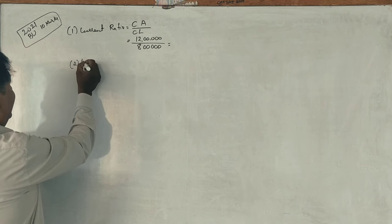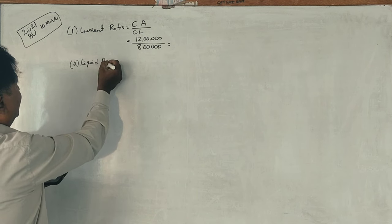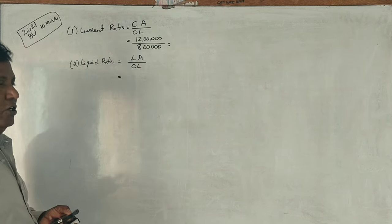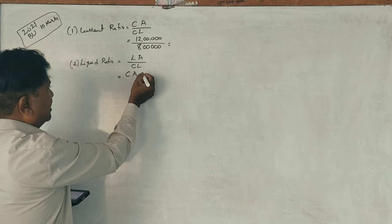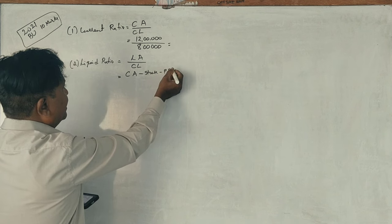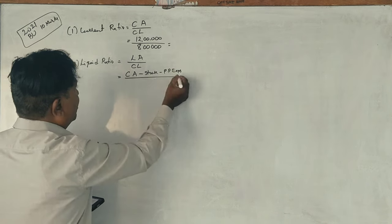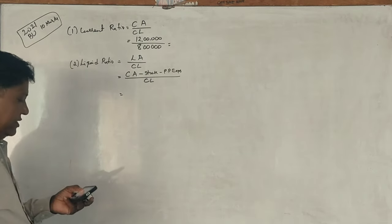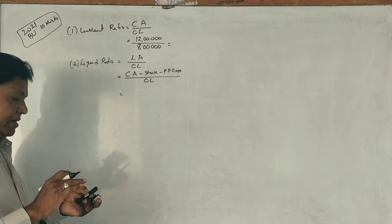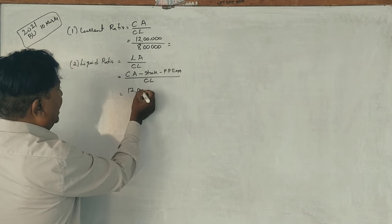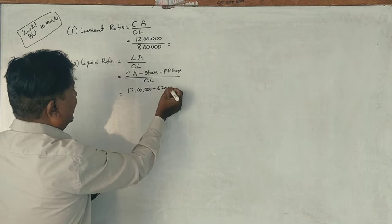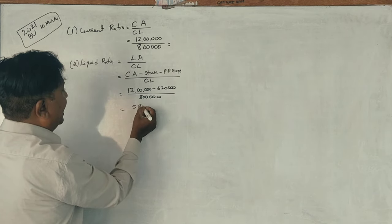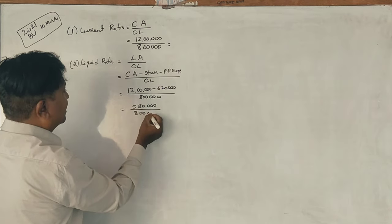Next, liquid ratio. The formula is liquid assets divided by current liability. Liquid assets equals current assets minus stock and prepaid expenses. Total current assets is 12 lakhs, minus stock of 6 lakhs and prepaid expenses of 20,000, giving 5 lakh 80,000. Divided by current liability of 8 lakhs, the liquid ratio is 0.725 is to 1.